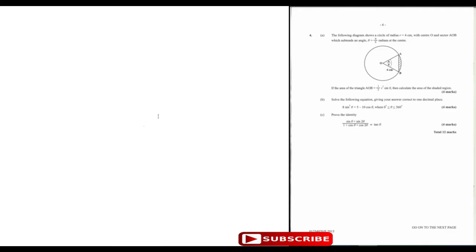Question four. It shows a circle with radius 4 centimeters and center O, with sector AOB. It says the area of the triangle is one half r squared sine theta. The area shaded equals the area of the sector minus the area of the triangle.